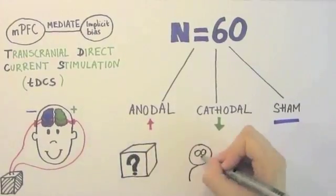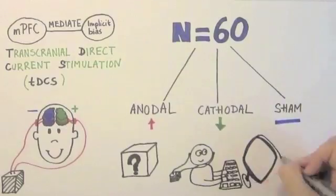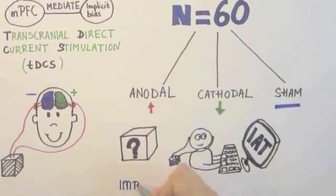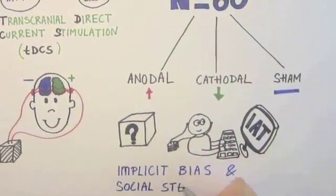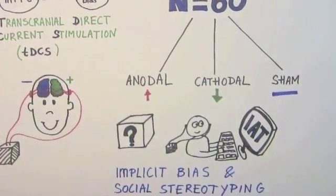Participants didn't know which type of stimulation they received. During the stimulation, they had to complete the implicit association task, which is a reliable task that measures implicit bias and social stereotyping.